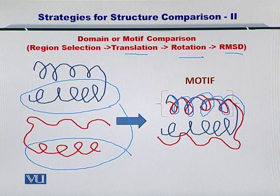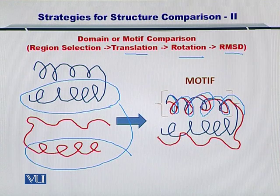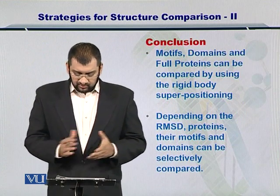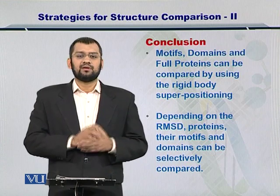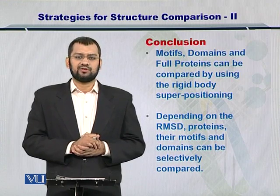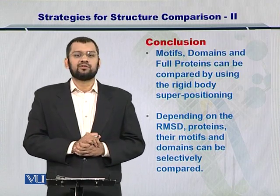So these are the two important things to know: for the whole protein, you calculate the entire RMSD, while for partial structure comparisons, you calculate RMSD for the selected region only. In conclusion, the motifs, domains, and entire proteins can be compared by simple rigid body superpositioning and their RMSD can be calculated towards ascertaining their proximity in terms of similarity.